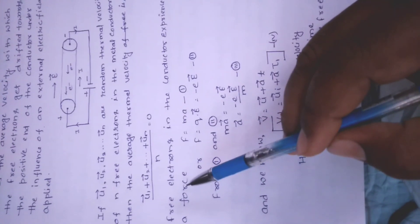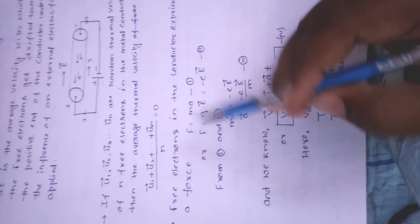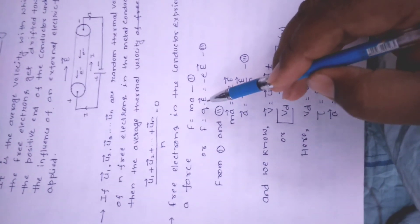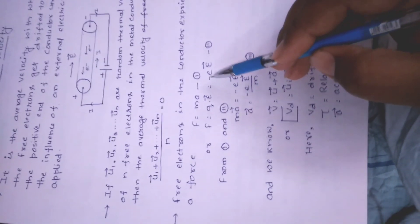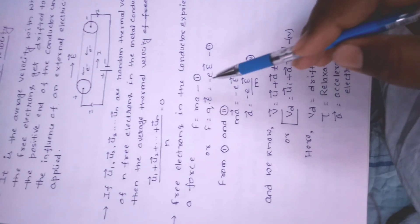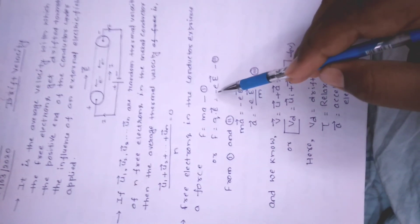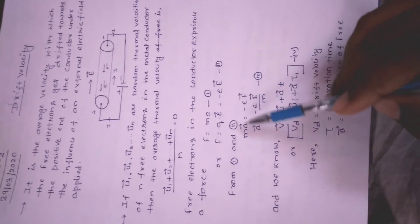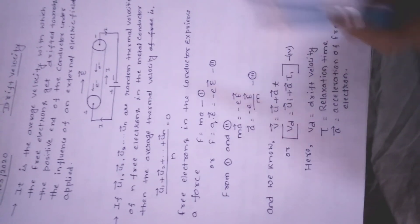Force के formula से: F = MA। Conductor में electrons के लिए, force F = QE। चूँकि charge electron का है, इसलिए F = -eE (negative sign क्योंकि electrons electric field के opposite direction में move करते हैं)। Equation 1 और 2 compare करने पर: MA = -eE, इसलिए A = -eE/M। यह हमारा equation number 3 है।